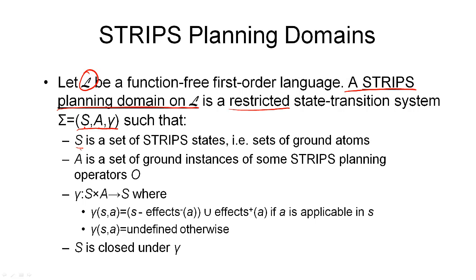The set S of possible world states is defined as the set of all possible STRIPS states — all sets of ground atoms you can possibly define. The set of actions is the set of all ground instances of some STRIPS planning operators defined in the planning domain. The state transition function is deterministic, mapping a state S and an action A to a new state by taking all ground atoms true in that state, removing the negative effects of the action, and adding the positive effects. If the action is not applicable, gamma of S and A is undefined.